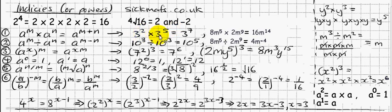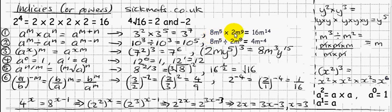Of course the base number has to be the same for this rule to work. Here's the same idea using letters: m to the 5 times m to the 9. I've made it look more complicated by sticking numbers in front — you just do 8 times 2 which is 16, times the normal numbers together, and add the powers.